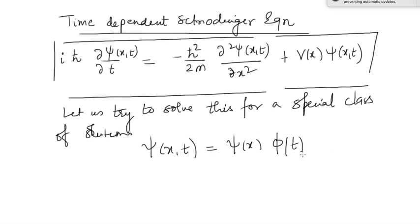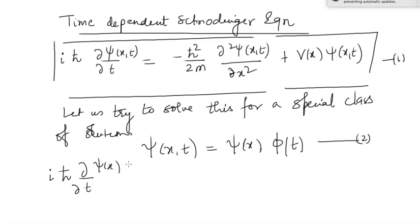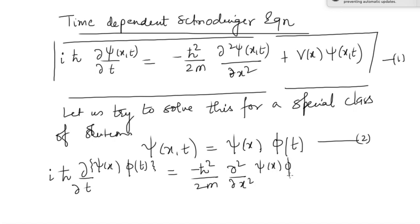So basically I am using the method of separation of variables. I am trying to separate the position dependence and the time dependence. Let us try with this ψ(x,t) whether it satisfies the Schrödinger equation or not. Now if I substitute — let me call the original equation Equation 1 — putting this solution into Equation 1, what do I get? iħ ∂/∂t of [ψ(x)·φ(t)] = −ħ²/2m · ∂²/∂x² [ψ(x)φ(t)].